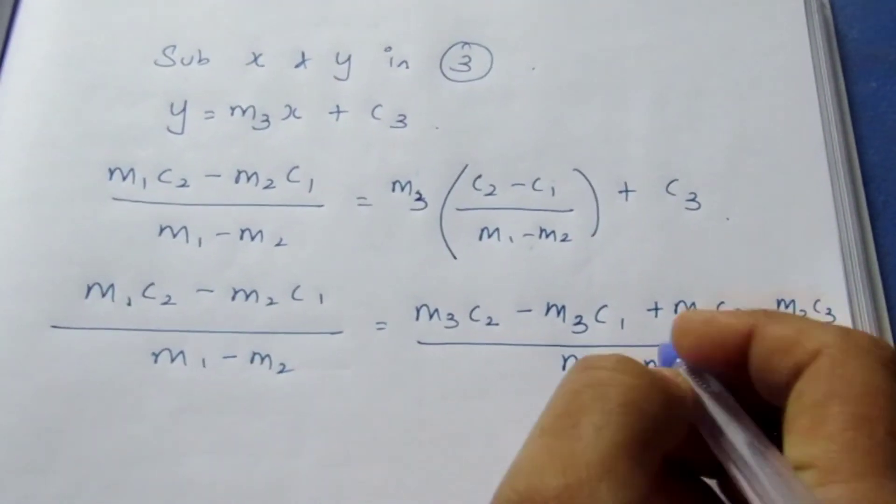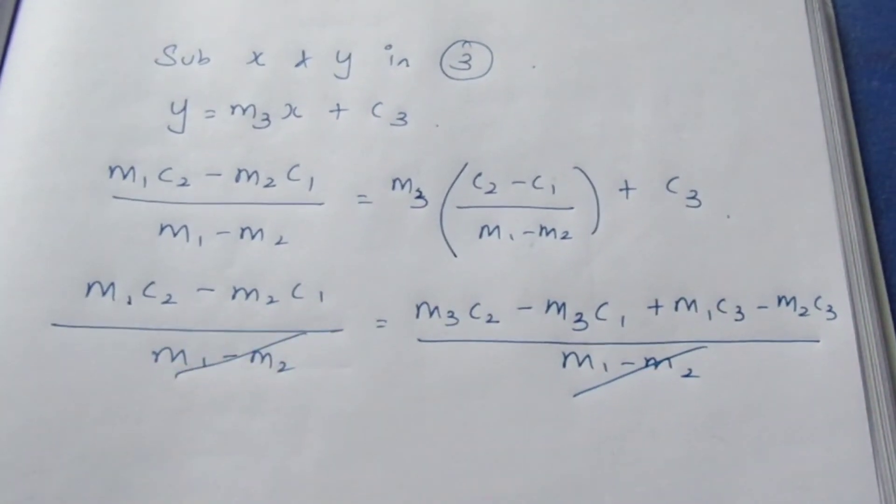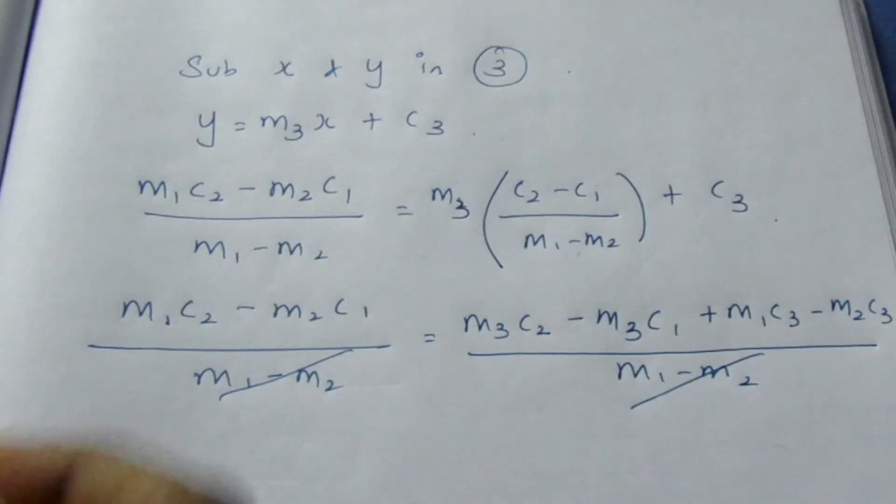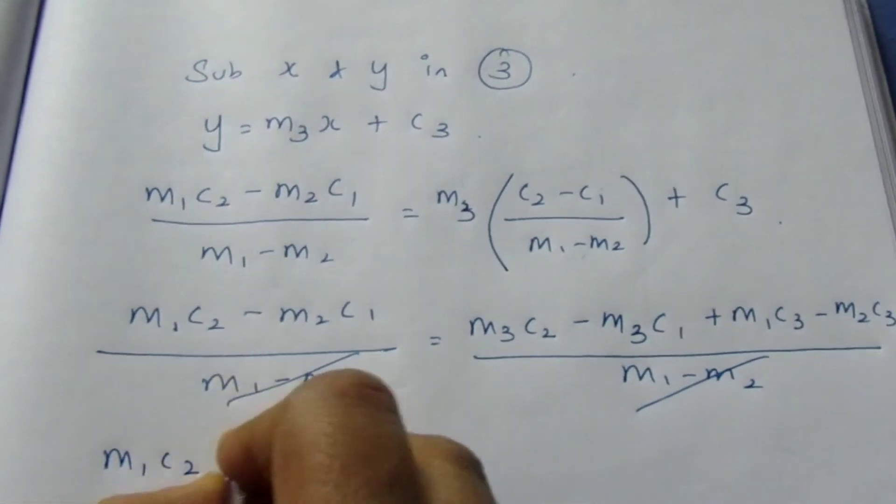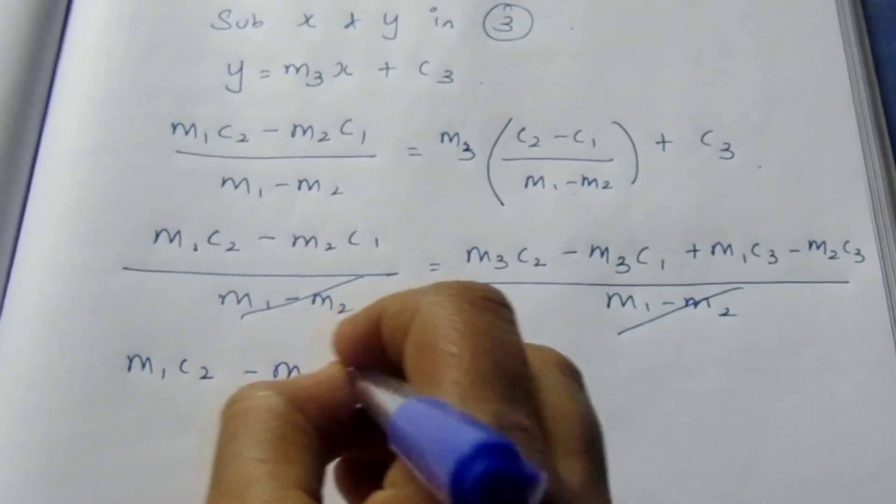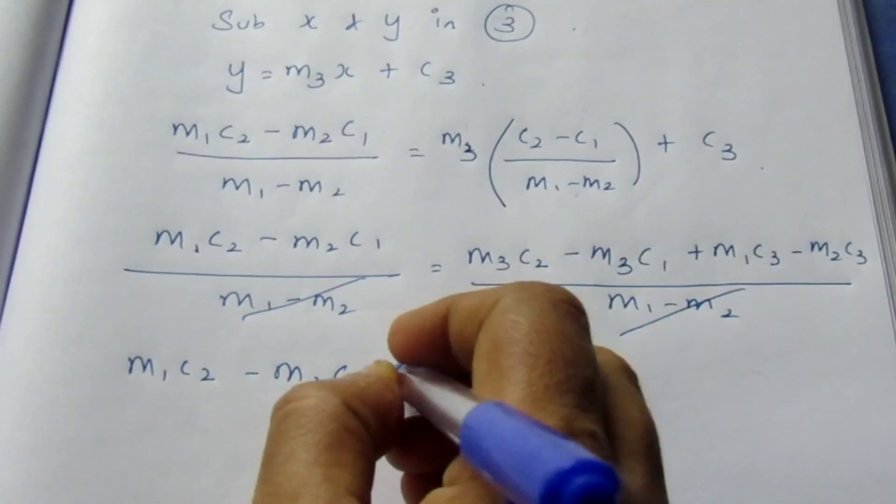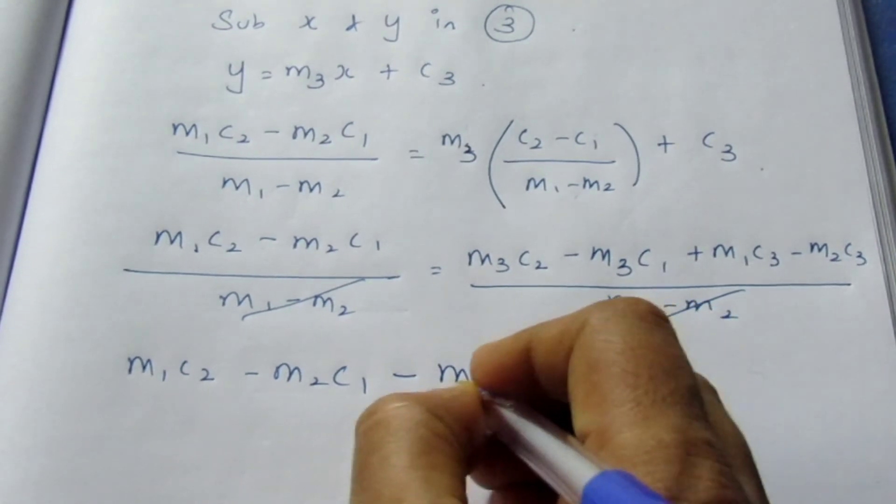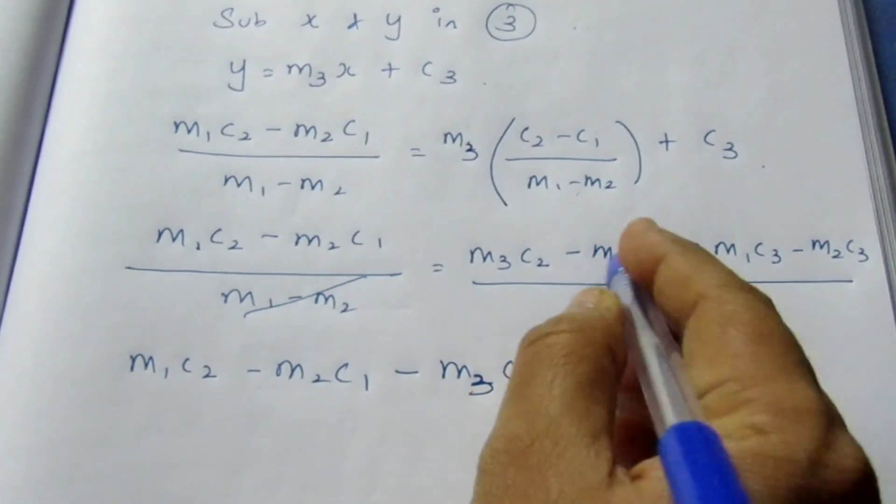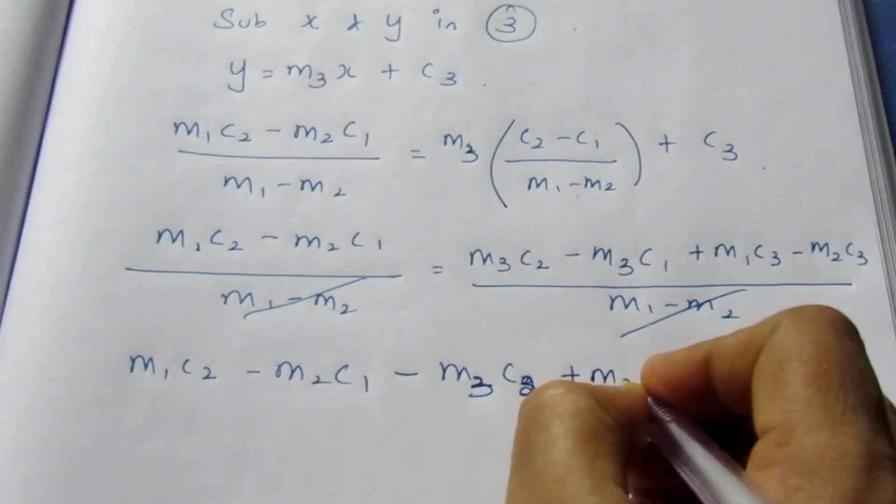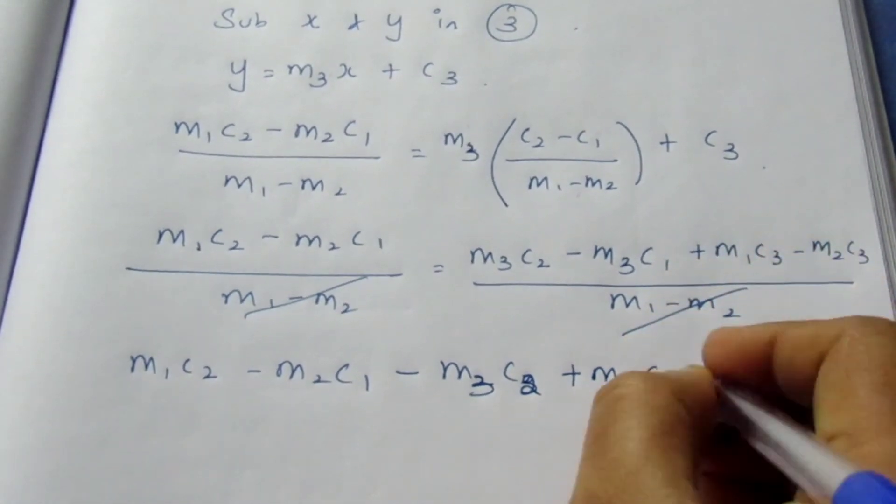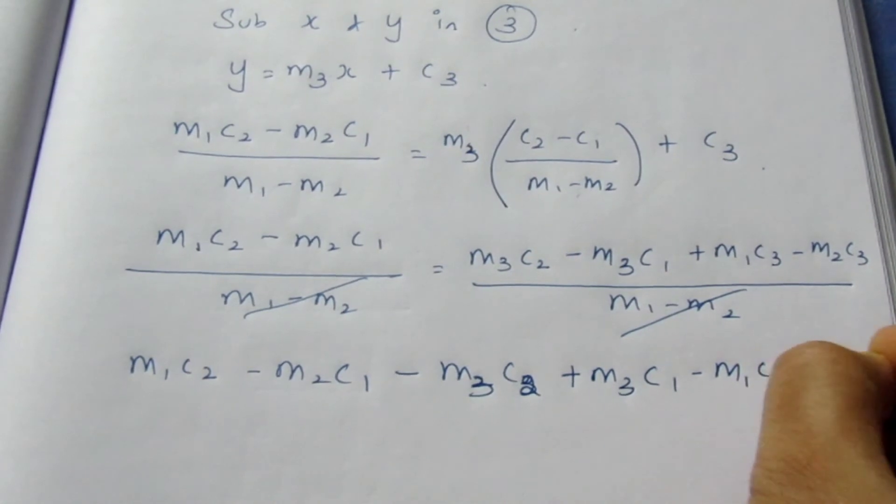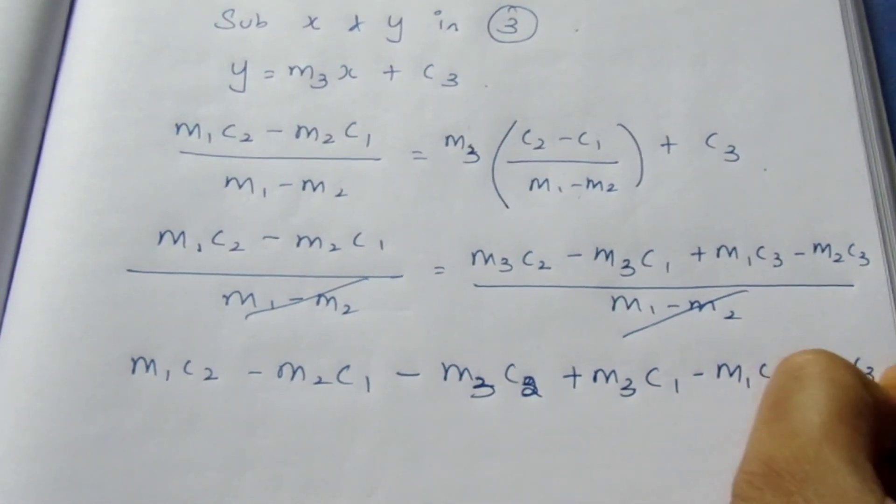Now this gets cancelled because of the same denominator. Taking everything to one side: m₁c₂ - m₂c₁ - m₃c₂ + m₃c₁ - m₁c₃ + m₂c₃ = 0.